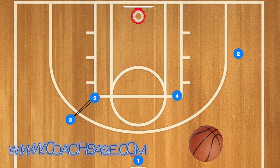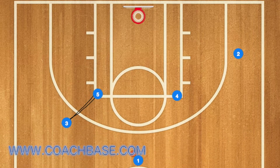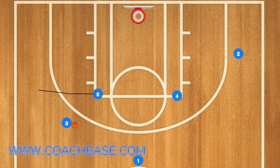First, five will set a screen for player three, and then one will pass the ball to player three. Five will then pop out and three will pass five the basketball.